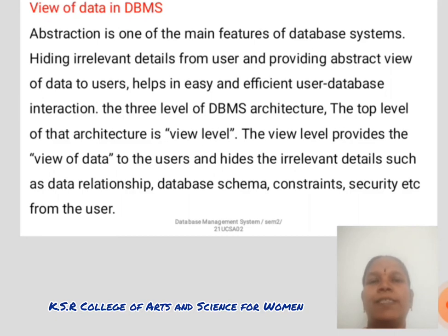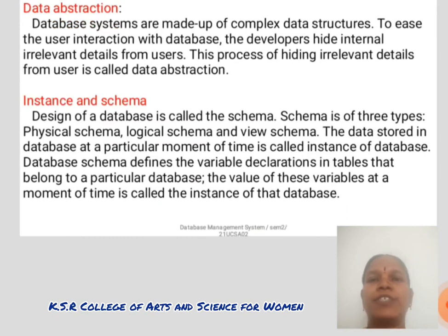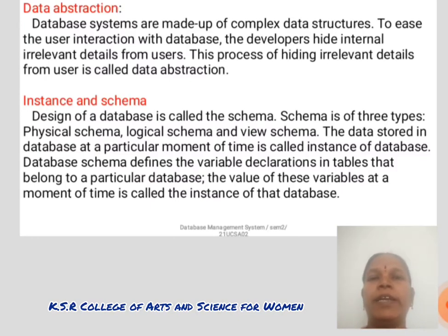database schema, constraints, security, etc., from the user. Data abstraction: database systems are made up of complex data structures. To ease user interaction with the database, the developer hides internal irrelevant details from the user. This process of hiding irrelevant details from the user is called data abstraction.